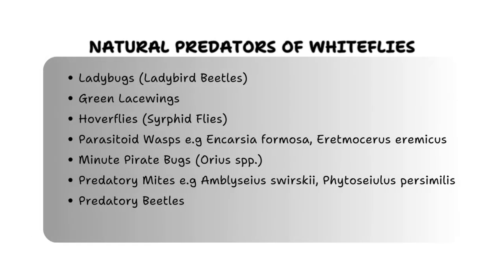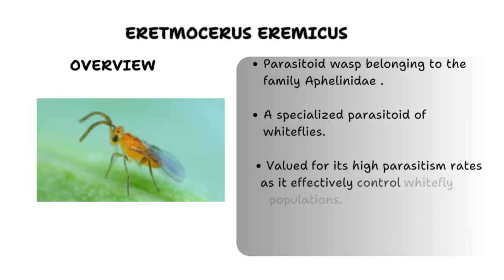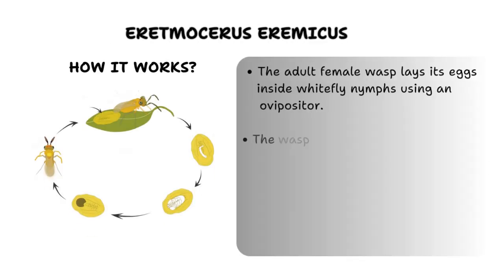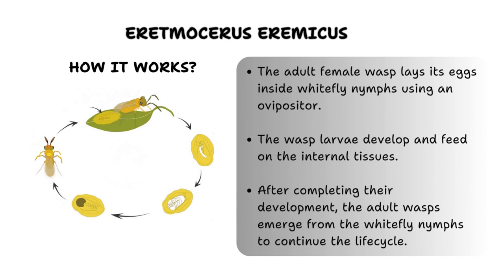The final category of biological control measures against whiteflies is the use of natural predators. These include ladybugs, green lacewings, hoverflies, parasitoid wasps like Encarsia formosa and Eretmocerus eremicus, minute pirate bugs, predatory mites and predatory beetles. We will focus on Eretmocerus eremicus — a highly specialized parasitoid wasp of whiteflies, highly valued for its high parasitism rates and commercially available. These tiny wasps parasitize whitefly nymphs by laying their eggs inside them. Once the eggs hatch, the developing wasp larvae feed on the internal tissues of the whitefly nymph, eventually killing it.